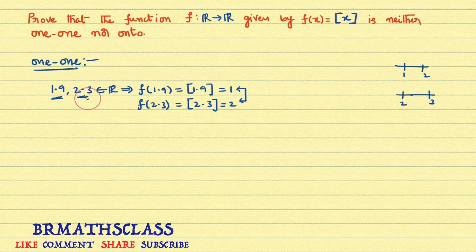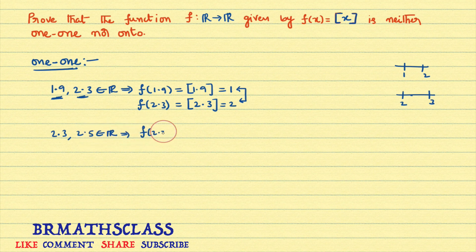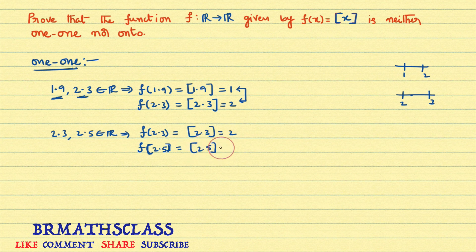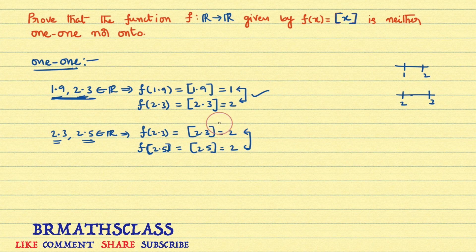Instead, consider 2.3 and 2.5. f(2.3) = step(2.3) = 2, and f(2.5) = step(2.5) = 2. Here, two different elements have the same image. When the function is not one-one, we can give such a counter-example to show that different elements have the same image, and therefore the function is not one-one.